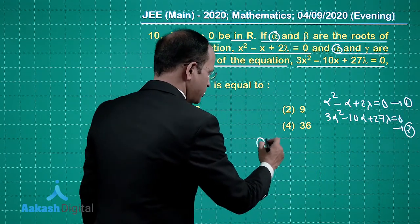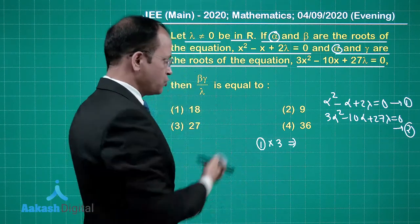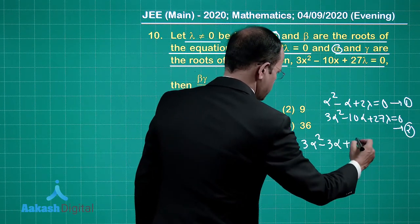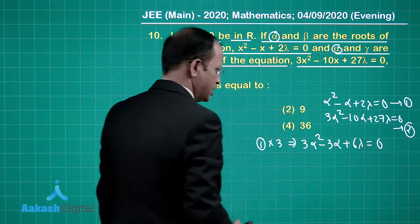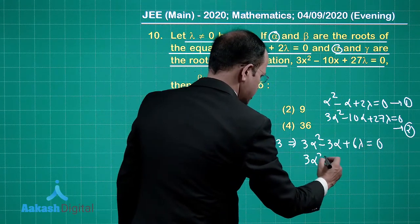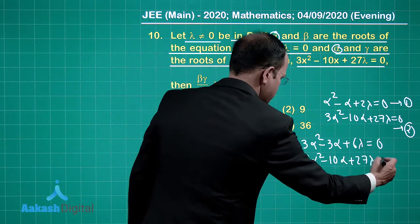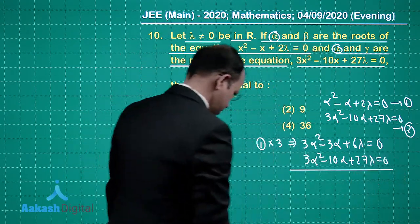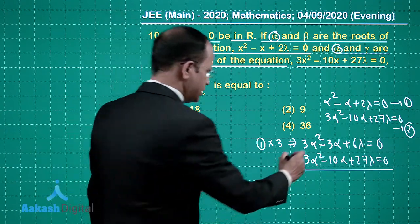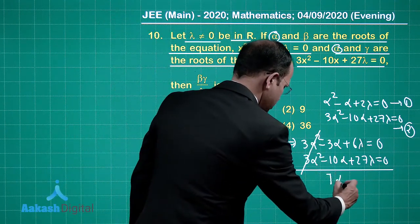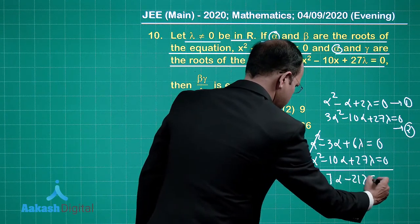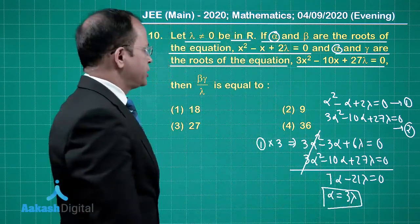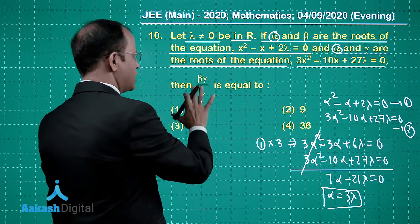Multiplying equation 1 by 3 gives 3*alpha² minus 3*alpha + 6*lambda = 0. Subtracting this from equation 2, the 3*alpha² terms cancel, leaving 7*alpha minus 21*lambda = 0, so alpha = 3*lambda.